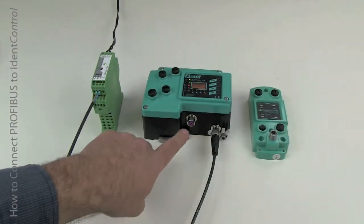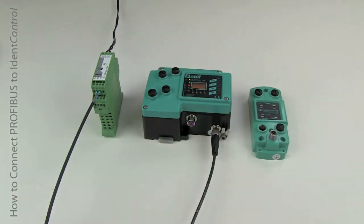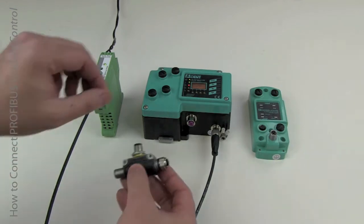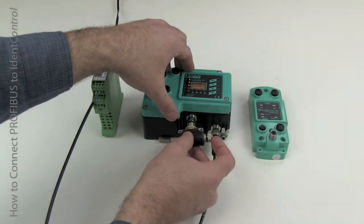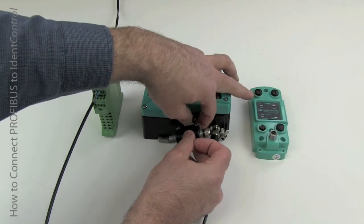The next way is to use the Profibus connection with the M12. This is the B-coded Profibus connector, and you want to connect the T or the Y cable, in this case the T, directly to the Profibus controller, never any drop length.